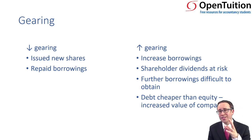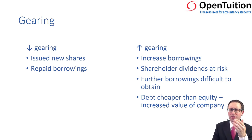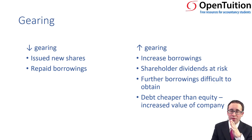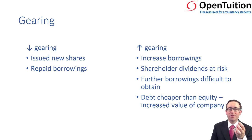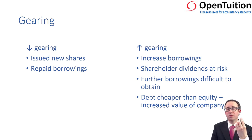An increase in gearing isn't necessarily bad news if the gearing ratio is still relatively low — for example, if you've only just recently started to take on debt. Even though your gearing is slowly increasing, that can be beneficial from a financial management perspective because debt is cheaper than equity. Using cheaper debt to fund the business gives you cheaper issue costs and a tax saving on the interest, meaning there's more cash within the business and the value of the entity will begin to increase.